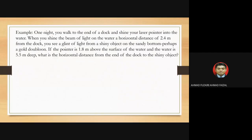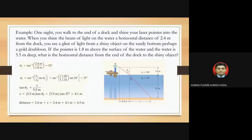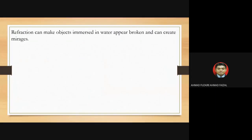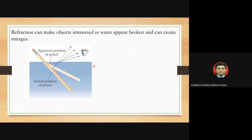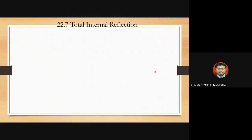The next example may be discussed with your lecturer. Refraction can make objects immersed in water appear broken and create mirages. For example, a pencil appears distorted — showing the apparent position versus the actual position. Mirages can also be seen when driving on a highway on a hot day.